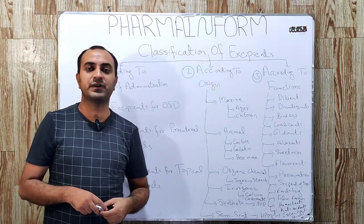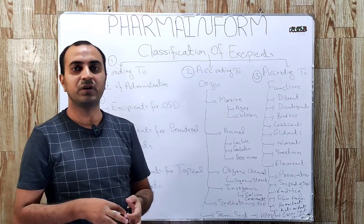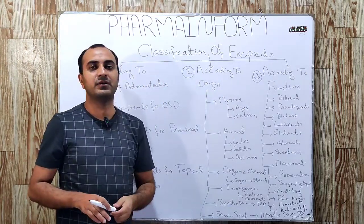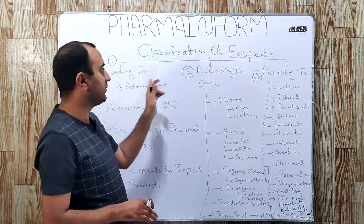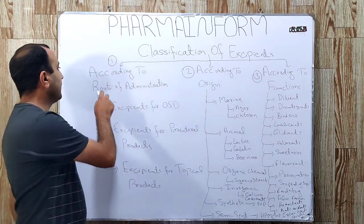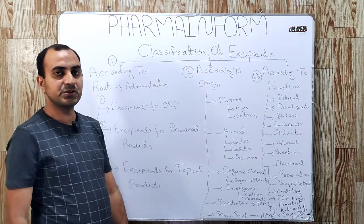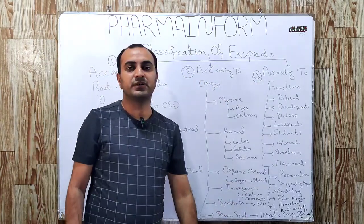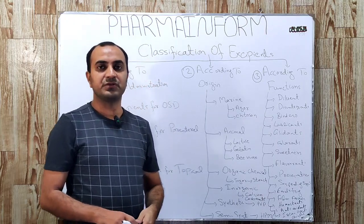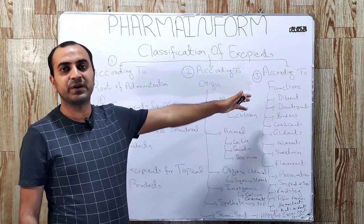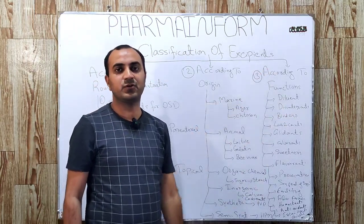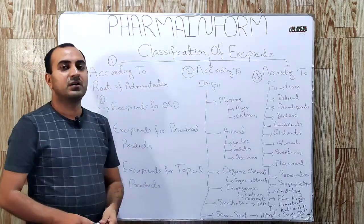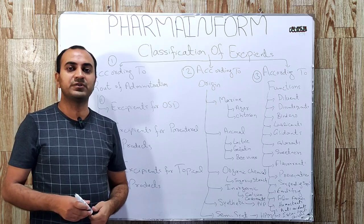How do we classify our excipients for pharmaceutical dosage forms? We classify our excipients in three ways. First is according to route of administration. Second is according to origin. Third is according to their function. Which classification system is best, we will discuss later in this video. But first we will start with classification according to route of administration.